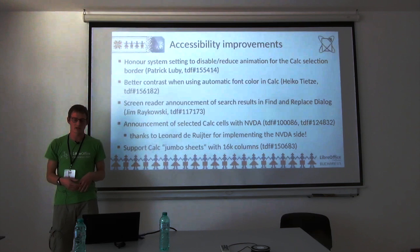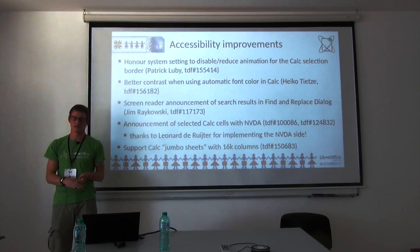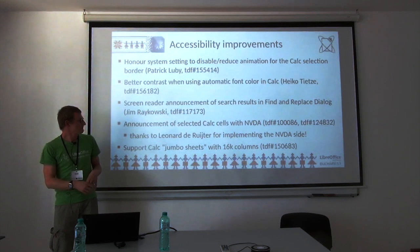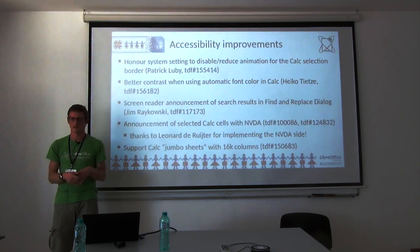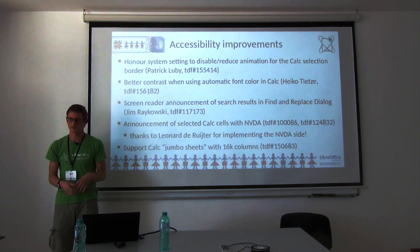Heiko improved contrast in Calc for automatic font color — it switches depending on the cell background. Black on white and white on black were fine, but the transitions in between weren't ideal; that's now improved. In the find and replace dialogue, a label that appears when there's no search result — or when you reach the end of the document — wasn't being announced by screen readers.